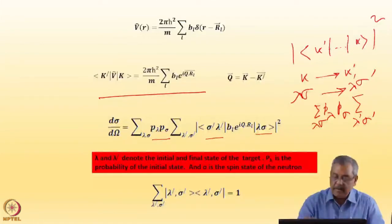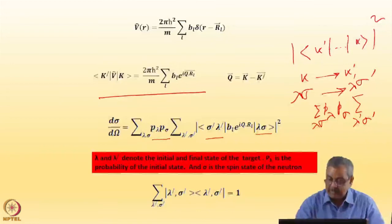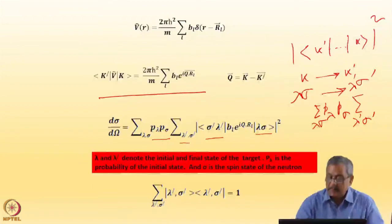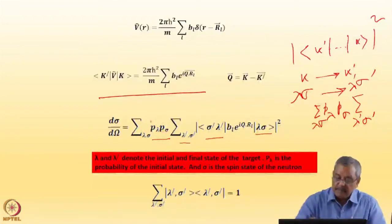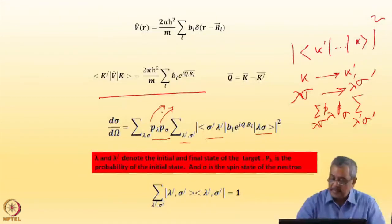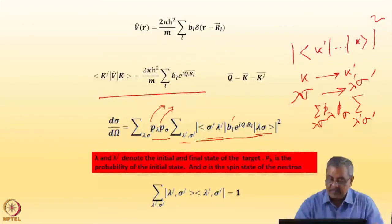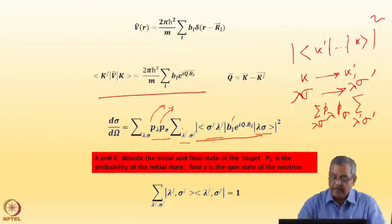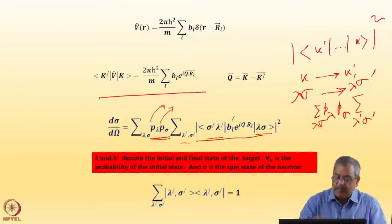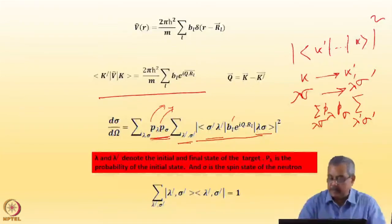So it is the final state and the initial state — P_lambda times P_sigma — summing over all probabilities of initial states of spin, energy, isotope, and anything else. You can ask why I have not put P_lambda-prime and P_sigma-prime: this expression gives the probability of all initial states, and then the probability of transition to all possible final states, so there is no P_lambda-prime P_sigma-prime — just a summation over all final states.